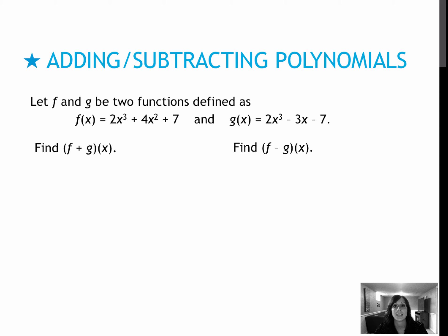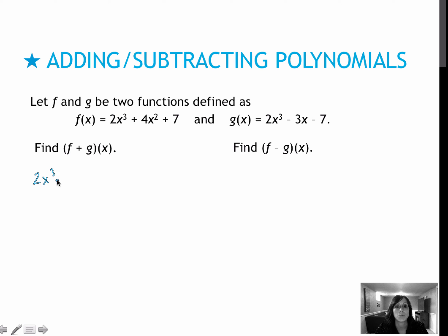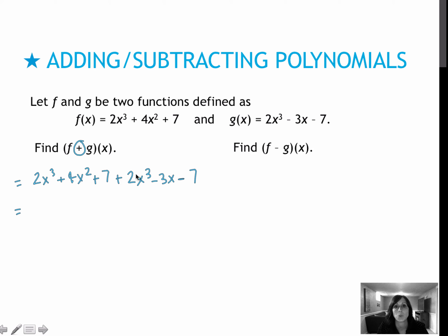Go ahead and do this one on your own, then see how you did. For my first example, I've got 2x cubed plus 4x squared plus 7, and I'm adding 2x cubed minus 3x minus 7. I didn't even bother writing it in parentheses because I knew there was going to be a plus sign in between. Combining like terms, I get 4x cubed plus 4x squared. If it helps to cross them off as you go, you may do that. Minus 3x, and then plus 7 and minus 7 cancel.